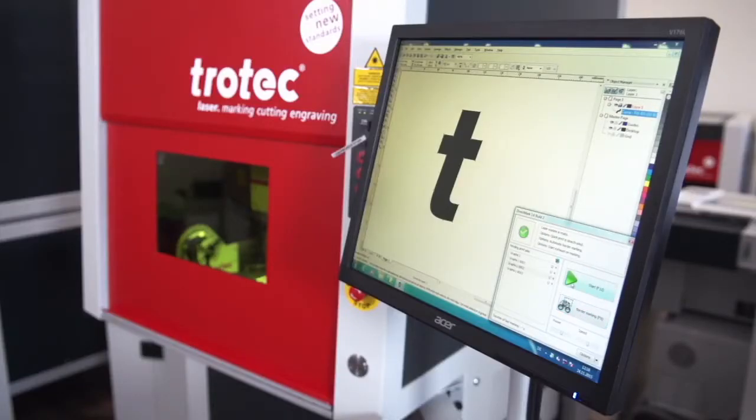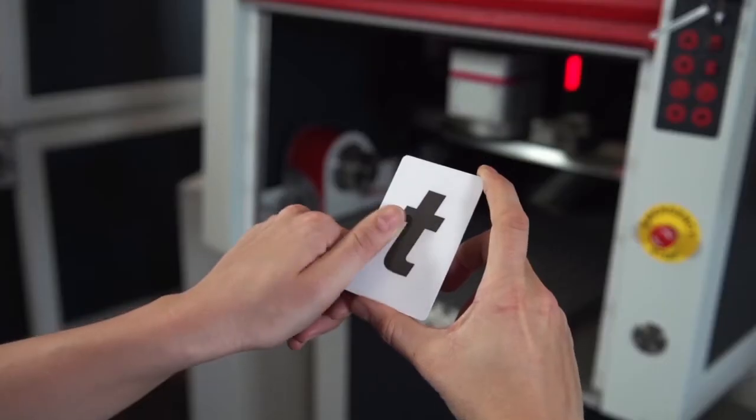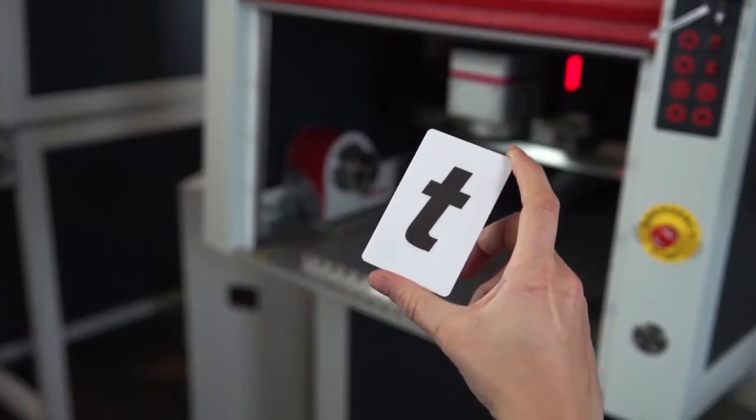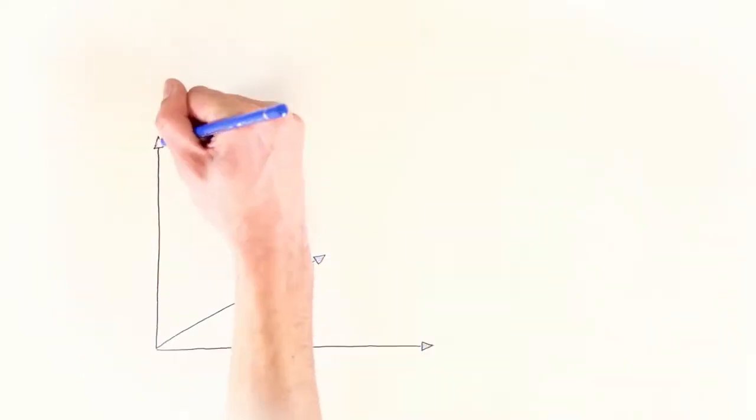In this video we explain laser marking. Laser marking, also called laser labeling, works by generating contrasts on materials or workpieces to convey information. Workpieces come in many shapes and sizes, from flat plates to complex components and flexible materials.